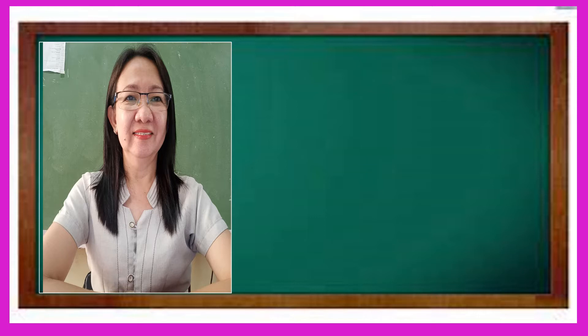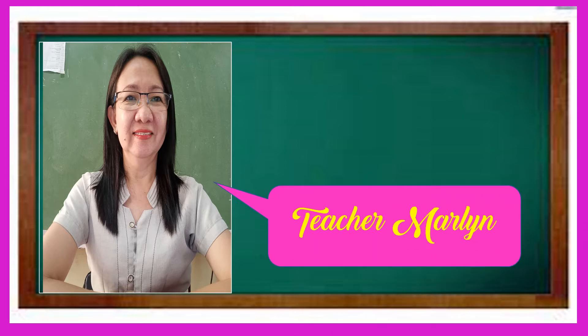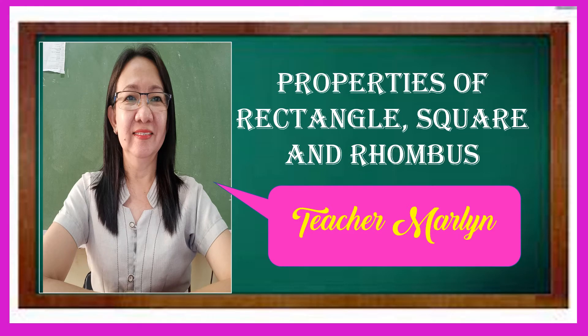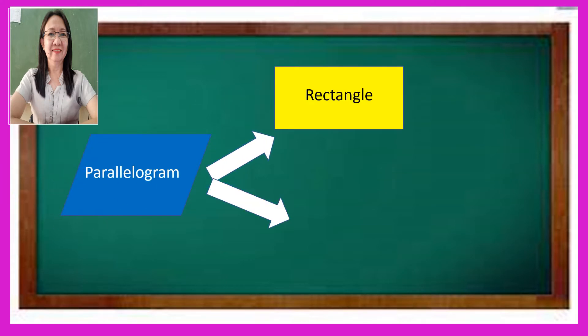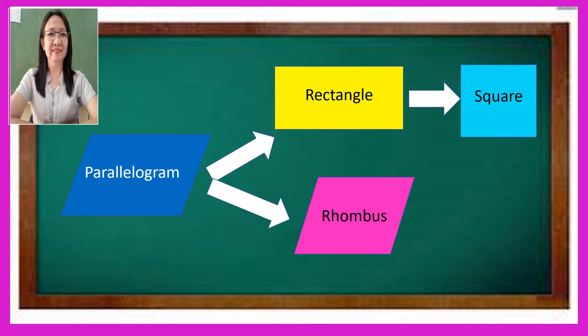Good day to all of you. It's another learning day. This is your teacher Marlene, and I have to discuss on this video the properties of rectangle, square, and rhombus. In our first video about the quadrilateral, I introduced to you the family of quadrilateral. From the kinds of parallelogram are the rectangle and the rhombus, and a special kind of rectangle is a square. This is the family tree of parallelogram, and we are going to discuss here their properties.